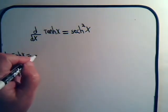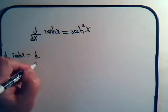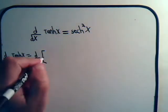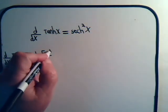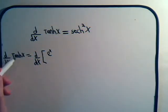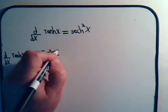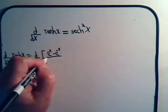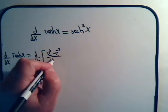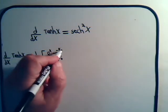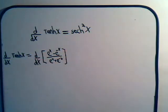That will equal d/dx of the hyperbolic sine divided by the hyperbolic cosine. So we're going to have e to the x minus e to the minus x, divided by e to the x plus e to the minus x. And we want to take the derivative of this expression.